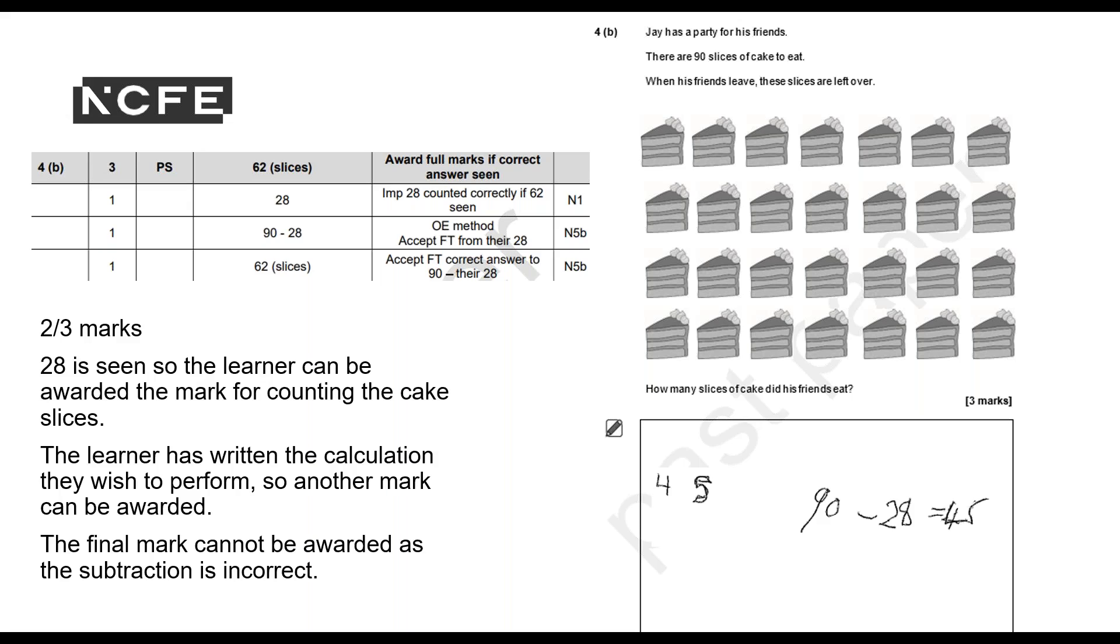And I'll show you that on the screen now. We're going to give two out of three marks. So we can see the 28 there—they've counted that we've got 28 pieces of cake there. So they can have the mark for counting the 28 slices of cake. Then they do get the next mark, 90 take 28, so they've got that mark there. But the final mark cannot be awarded because 90 take away 28 is not 45. They should have reached 62 slices.